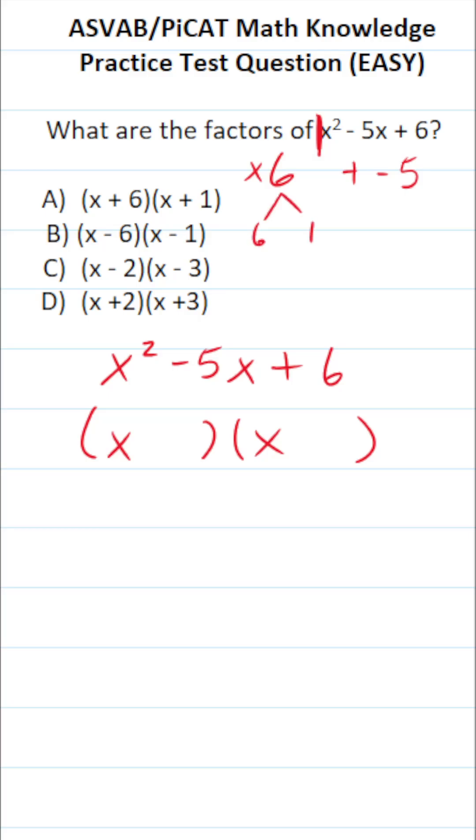What about 6 and 1? 6 times 1 is, in fact, 6. 6 plus 1 is 7, not negative 5, so these aren't going to work.